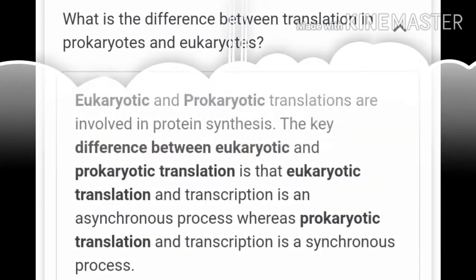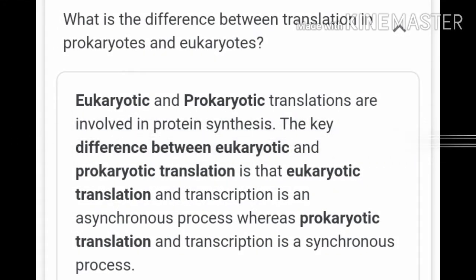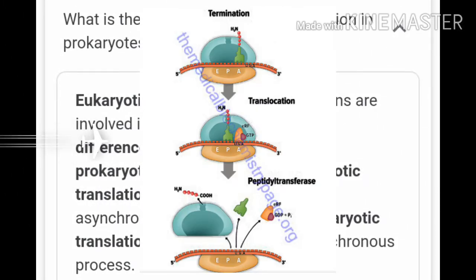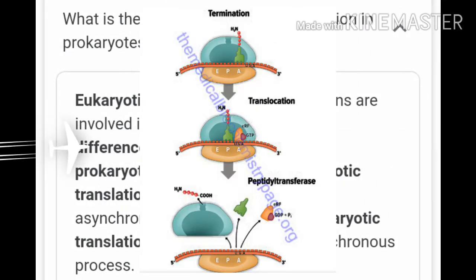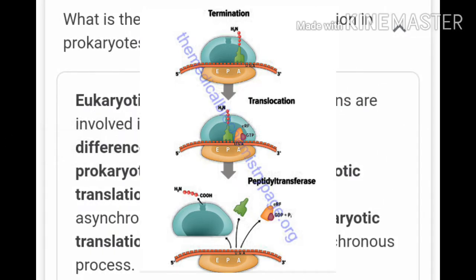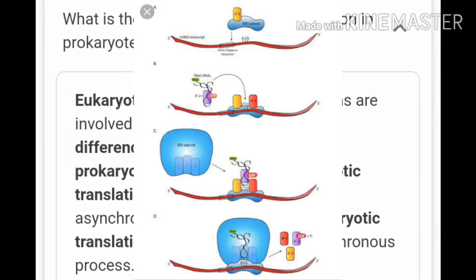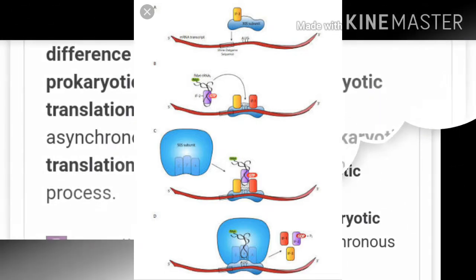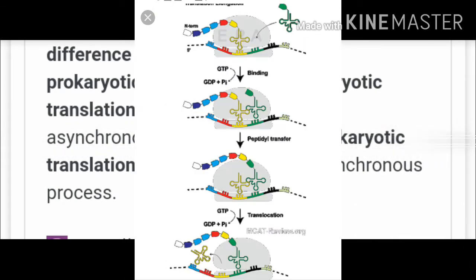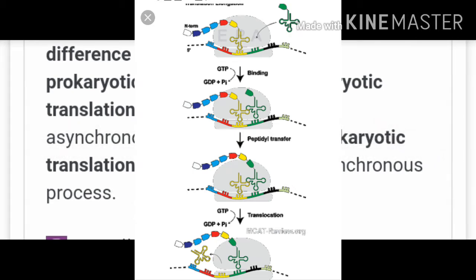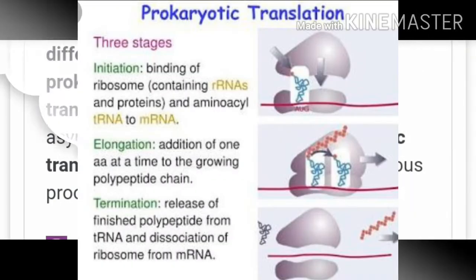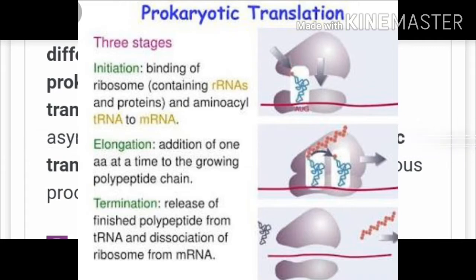The second step is transfer of amino acid to tRNA. The ribosome consists of structural RNAs and about 80 different proteins. In its inactive state it exists as two subunits — a large and a small subunit. When the small subunit encounters an mRNA, the process of translation of mRNA to protein begins.